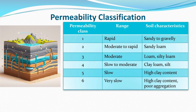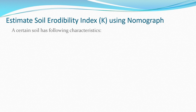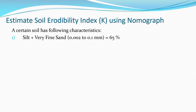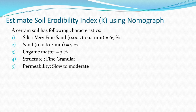To understand estimation of soil erodibility using the nomograph, consider this problem: a certain soil has silt plus very fine sand of 65 percent, sand of 5 percent, organic matter of 3 percent, structure of fine granular, and permeability of slow to moderate. We need to estimate the Soil Erodibility Index K using the nomograph.